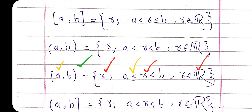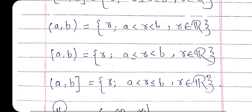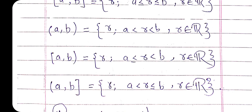Since b is not included, we use strictly less than b. Next, for the interval open from the left side: a is not included, but it is closed from the terminal side. So r belongs to the set of real numbers such that r is strictly greater than a and r is less than or equal to b, meaning b is also included in this set. From the b side, this interval is closed.